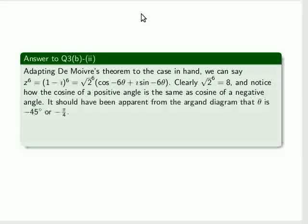in the cosine case it doesn't matter because the cosine of minus an angle is the same as the cosine of plus an angle. It should have been apparent though, from the Argand diagram, that theta is minus 45 degrees or minus π over 4.